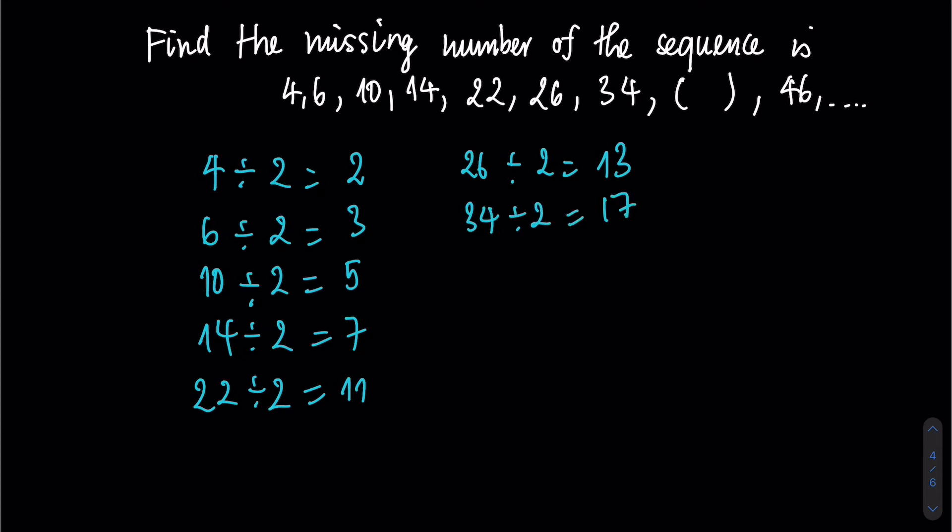Then the missing value, I will not write here since it is missing. 46 divided by 2 is 23. So now, after dividing by 2, I will write down the new sequence.